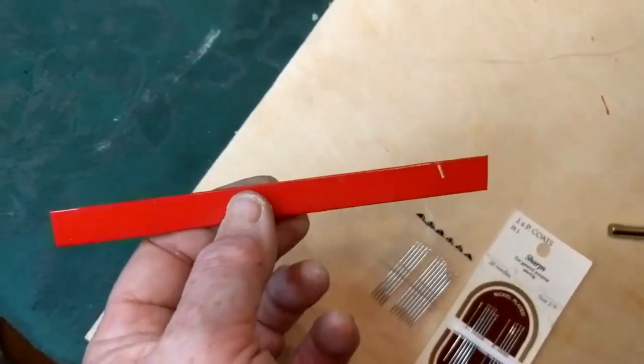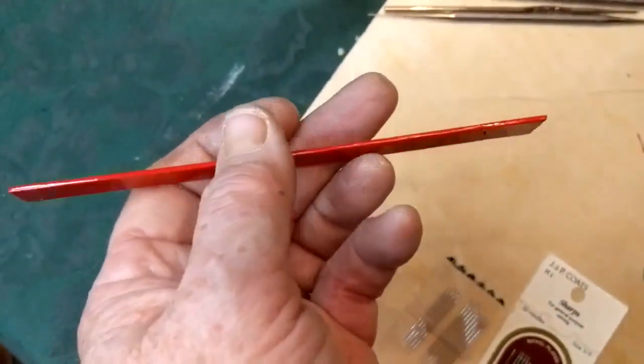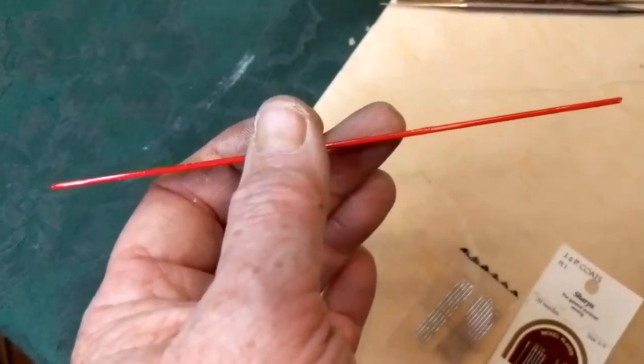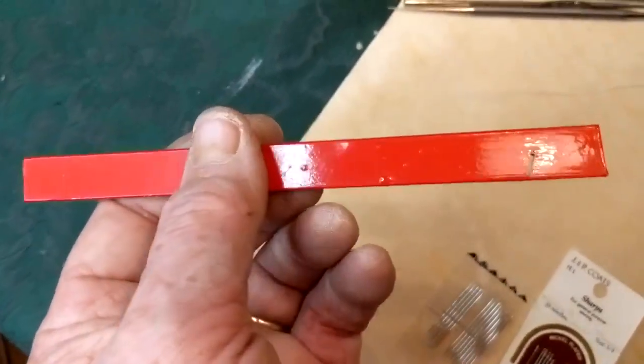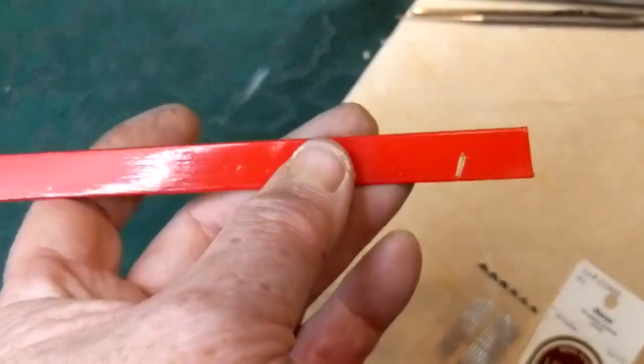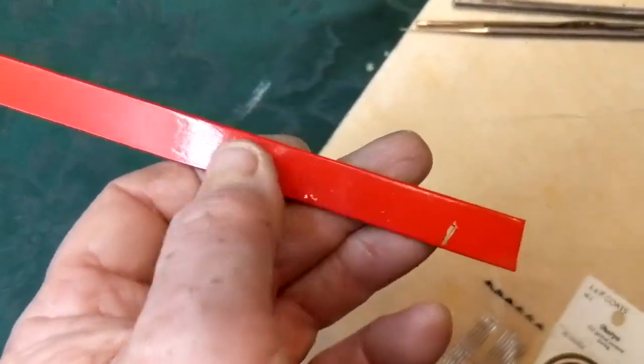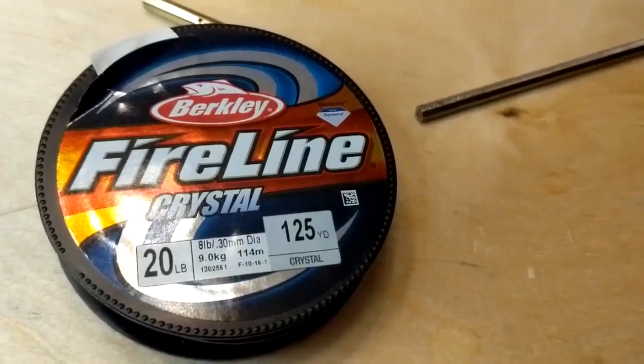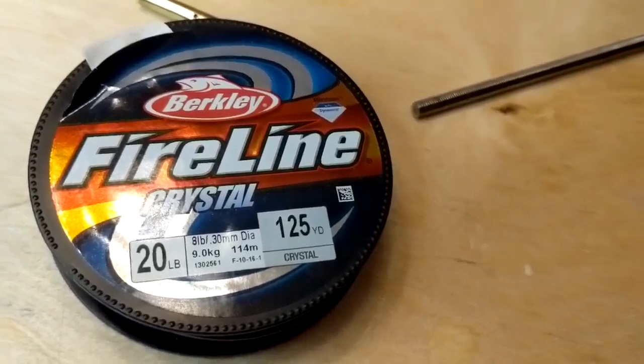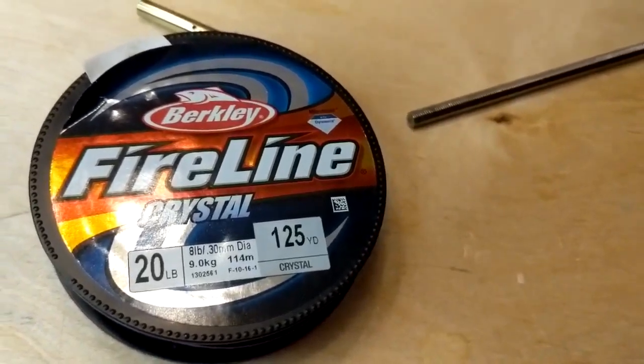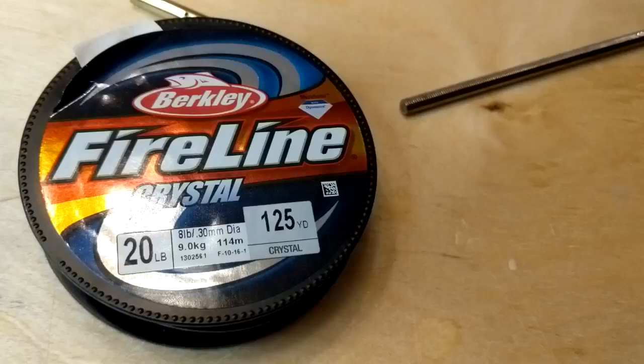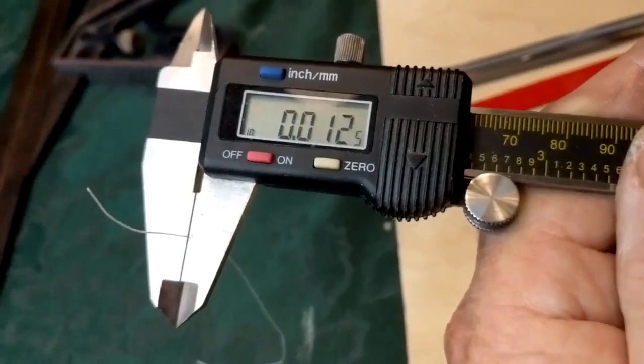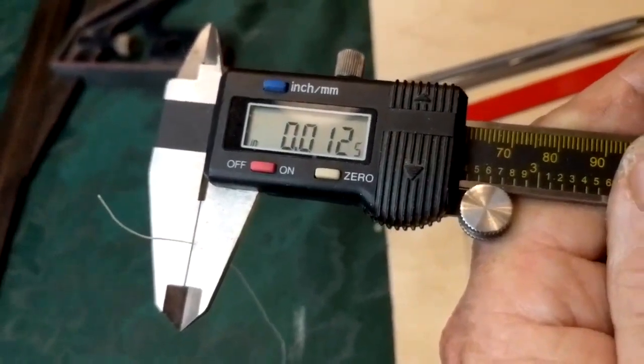The aileron, as with all the control surfaces on this model, is very thin and small. It's made from 1/16th inch balsa wood. Adding in the two pieces of covering, it ends up being a few thousandths thicker than that. This is the fishing line that I'll be using to make the hinges. It's 20 pound test, which probably means it would take about 40 pounds to break a strand of it. When measured with a digital micrometer, it's about twelve thousandths of an inch in diameter.